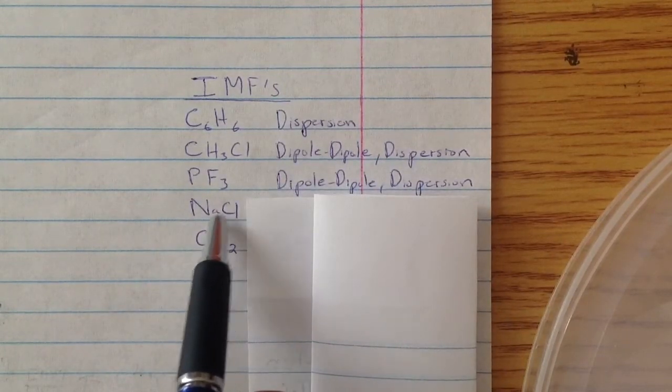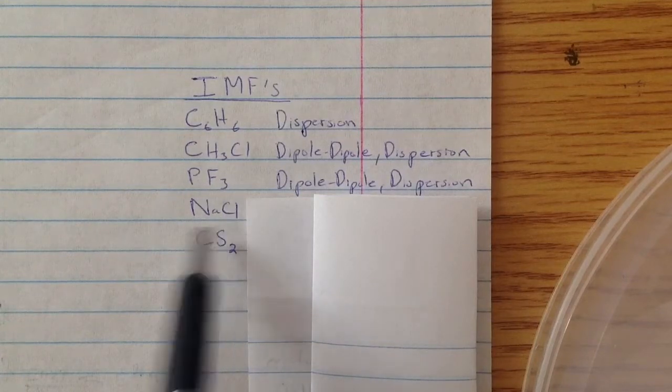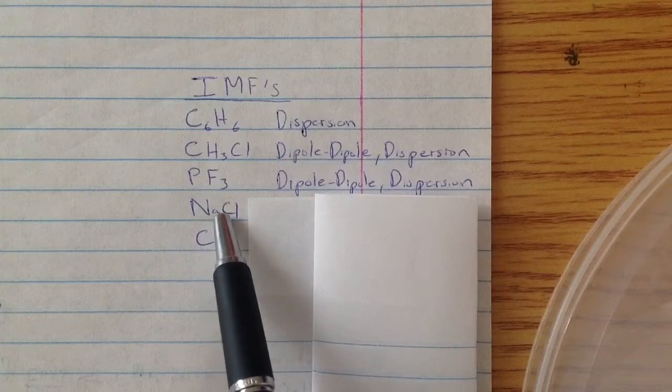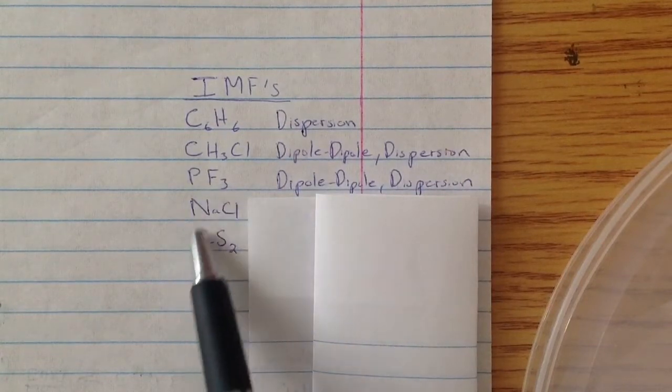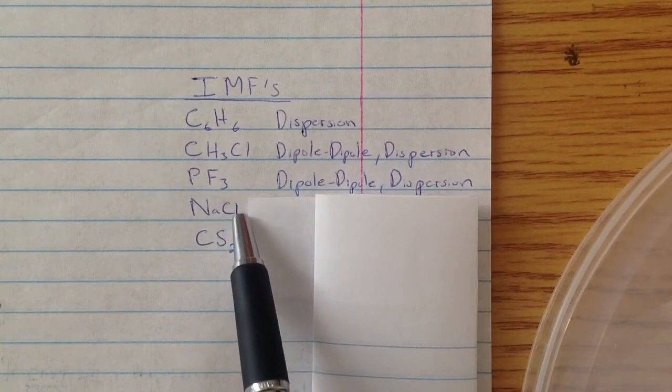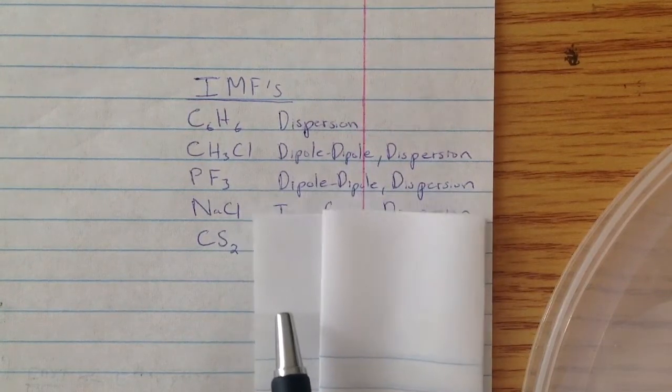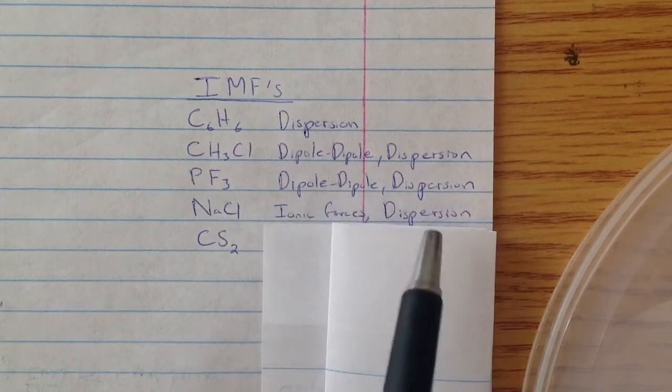Now, NaCl is going to be a little different because it has dispersion forces, but since this is a metal and a non-metal, this is actually going to have ionic forces. So it's going to have ionic forces and dispersion forces.